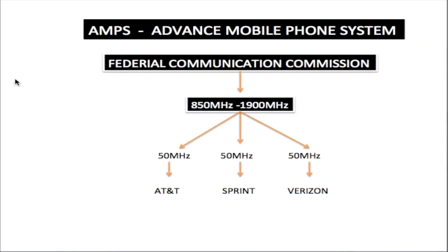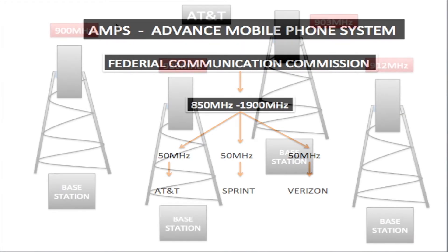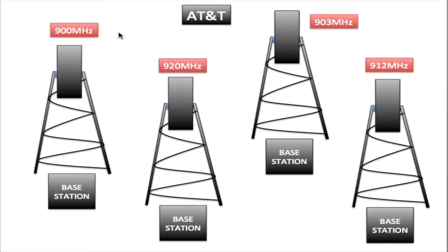In North America the AMPS network got its frequencies from the Federal Communications Commission. The frequency range was between 850 megahertz up to 1900 megahertz, and these frequencies were evenly divided into 50 megahertz chunks between all the carriers. Each and every carrier was assigned a 50 megahertz section of this frequency range. The carrier would then go ahead and assign these frequencies to the base stations as they see fit.